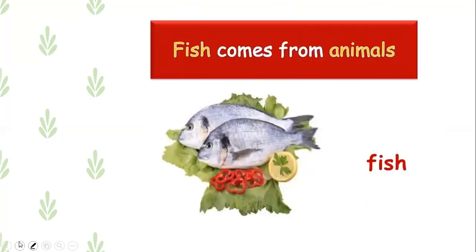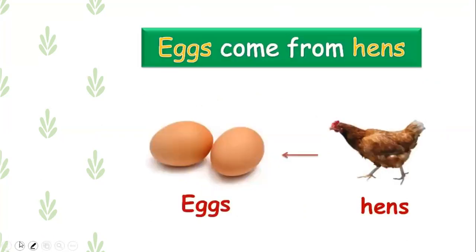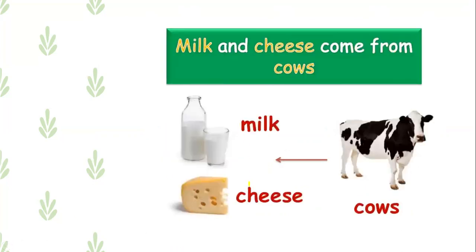Fish comes from animals. إذن أمثلة عن الأطعمة اللي مصدرها الأنيمالز مثل الفش. Eggs come from hens, so eggs come from animals. Milk and cheese come from cows, so also milk and cheese come from animals. These are examples about food sources that we can get from plants and animals.